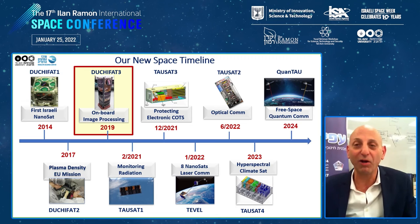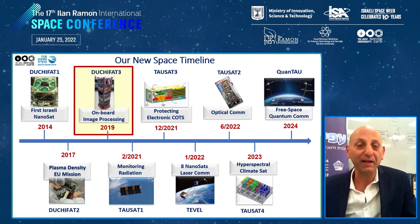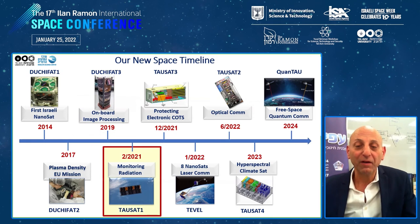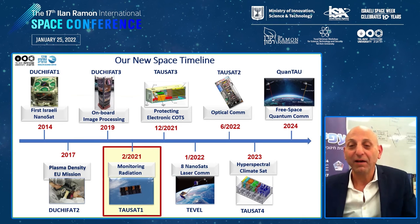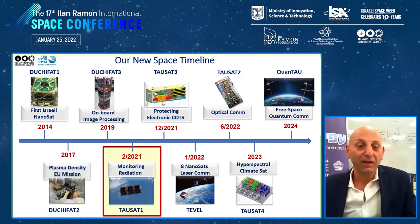The next evolutionary step was a 3U nanosatellite carrying a camera on board for Earth monitoring. This one was launched from India at the end of 2019. And in February last year, we launched TAUSAT-1, a CubeSat for monitoring radiation and heavy particles in orbit.